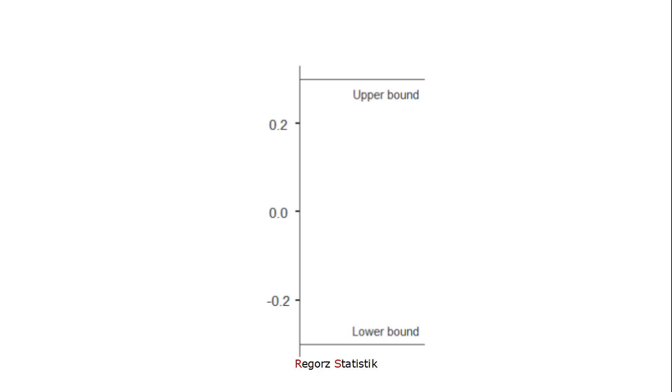For an equivalence test for correlations, we set a lower bound and an upper bound for our correlation. And we test if our correlation is smaller than the upper bound and at the same time higher than the lower bound.